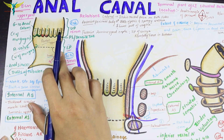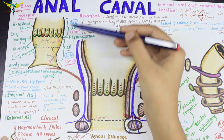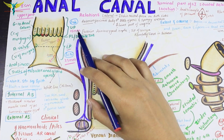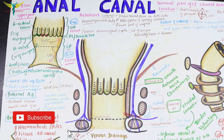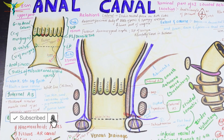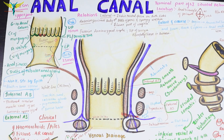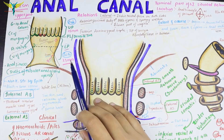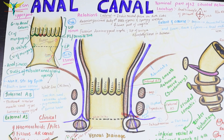The interior of the anal canal is divided into an upper part and a lower part. The upper part is endodermal in development and approximately 15 mm in length. The lower part is ectodermal in development and approximately 23 mm in length.